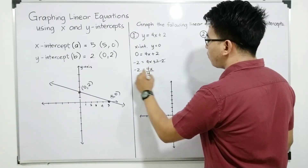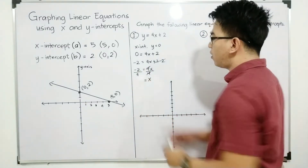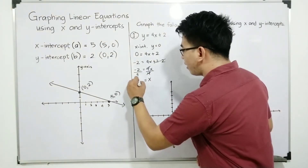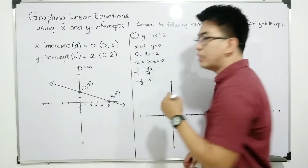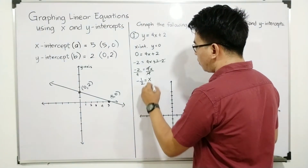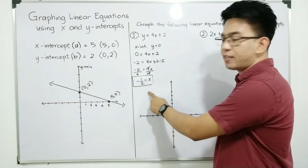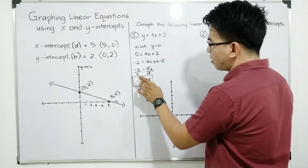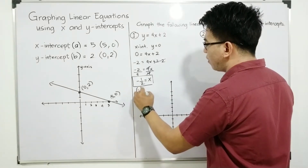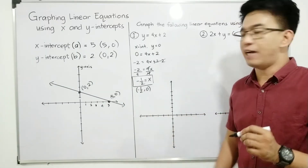To finally solve for x, divide both sides of the equation by 4. Simplify negative 2 over 4, which gives negative one-half, or -0.5. This is now the value of our x, which is our x-intercept. The coordinates of this x-intercept are (-1/2, 0), because y is equal to 0 and x is equal to negative one-half.